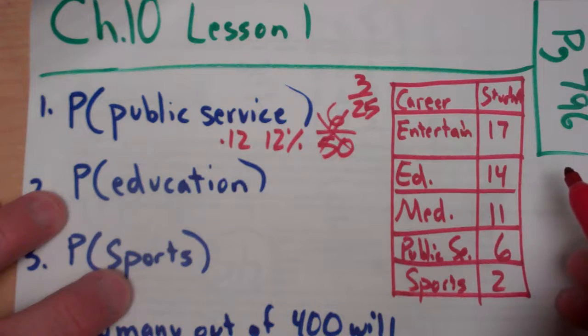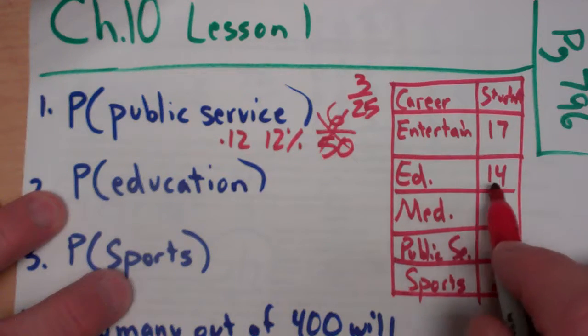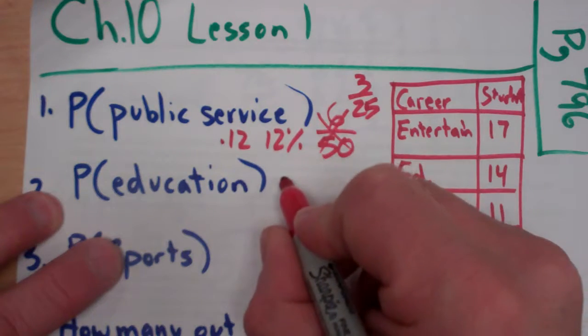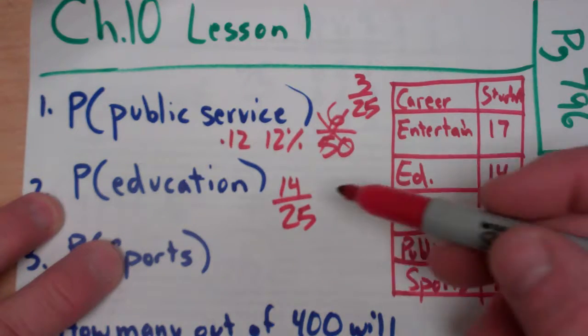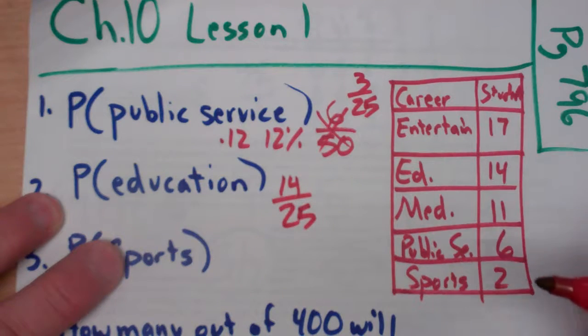So what's the probability that I choose somebody at random and they are interested in going into education? Well, I would have a 14 out of 25 chance. So, once again, that is simplified, but you could divide it.